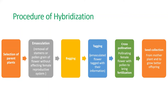After fertilization of the emasculated flower, we collect the seeds. Seed collection is done from the mother plant to grow better offspring. This procedure of hybridization is pretty simple.